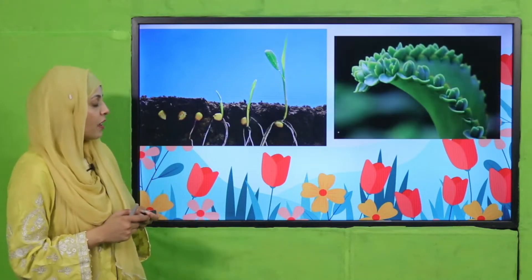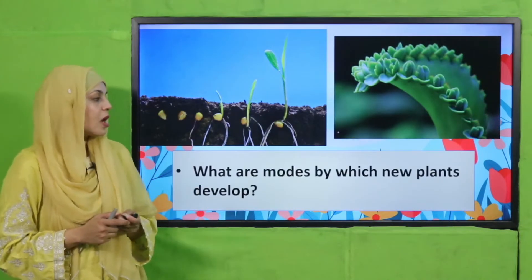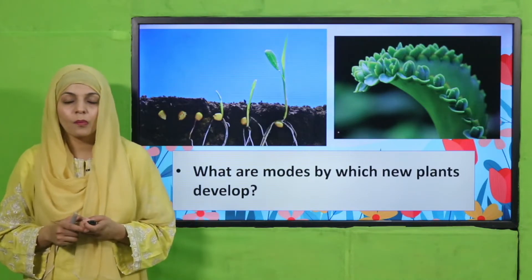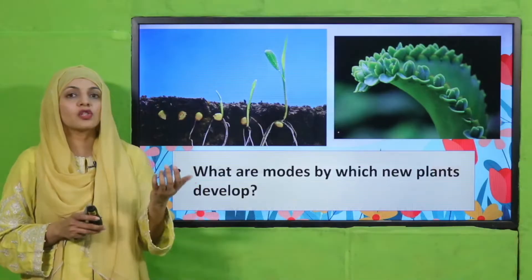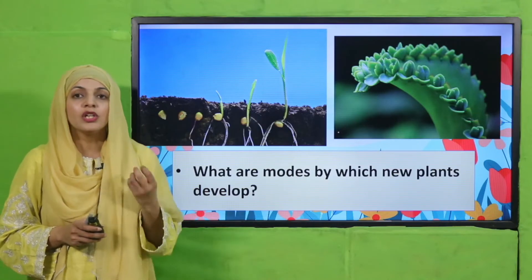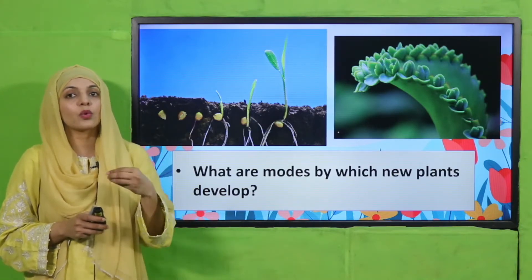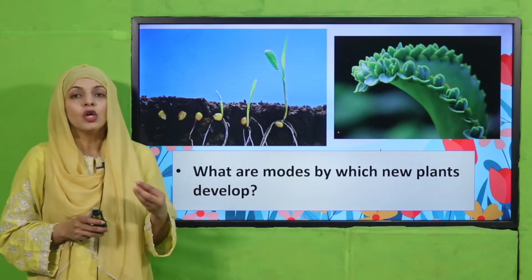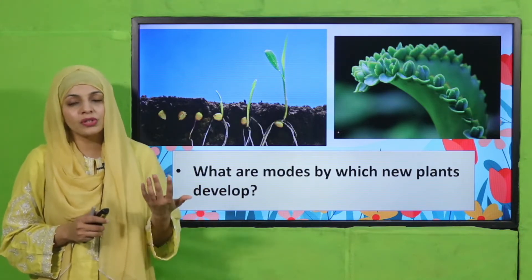Look at these pictures carefully and tell me: what are the modes by which new plants develop? Usually when you plant a seed in the ground, a new plant germinates from it. So the mode is: through seeds.